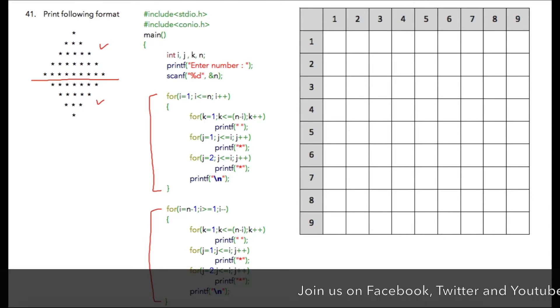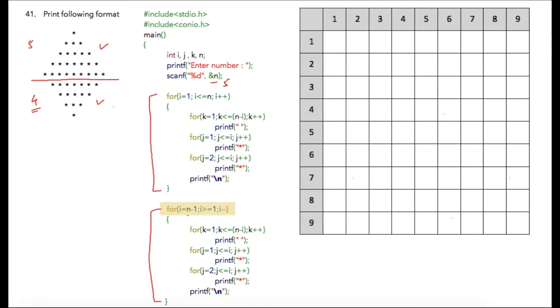Suppose the user has entered five, so these are five rows. However, here are four rows, so in the second for loop I have initialized i to n-1, that is five minus one which is four. So that is why the number of iterations will be four in this case, and here it will be five. That is the only important difference compared to the previous programs.